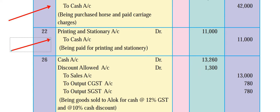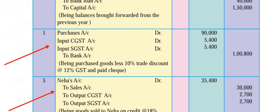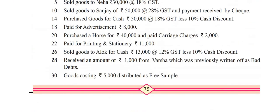Let's go to the 26th one for which explanation is given below. Sold goods to Alok for cash, 13,000 at the rate 12% GST, less 10% cash discount. Now students - for purchase we had discount received, and here for sales we have discount allowed. Output GST at 12% means 6% central and 6% state GST.